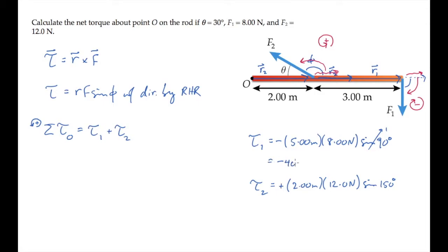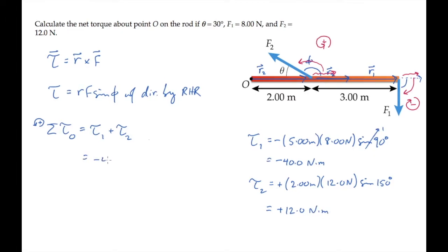Now we can calculate numbers. For torque one, we get minus 40 Newton meters. For torque two, positive 12 Newton meters. And come back over here and add those numbers together. The net torque then has a magnitude of 28 Newton meters, and it is directed into the page, providing a clockwise torque.